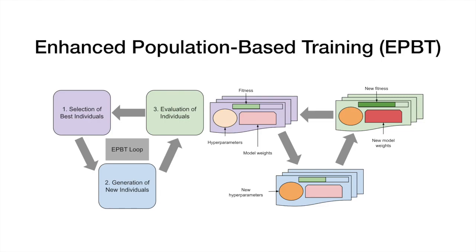In stage 3, these individuals are evaluated on a task, and have their model, fitness, and weights updated. There are two ePBT variants: one called ePBT-GA, which utilizes classic genetic EA operators such as mutation and crossover, and ePBT-CMA, which is based on covariance matrix adaptation evolution strategy.